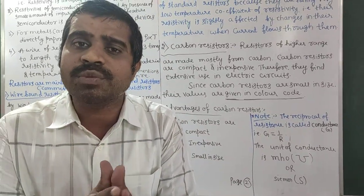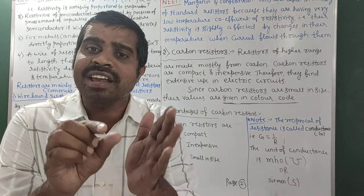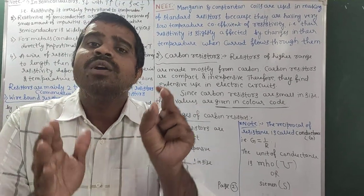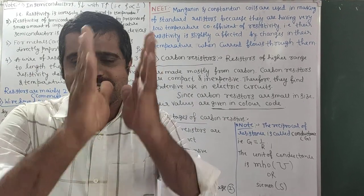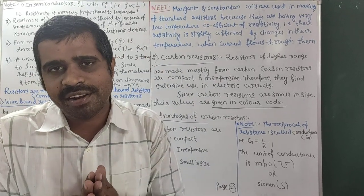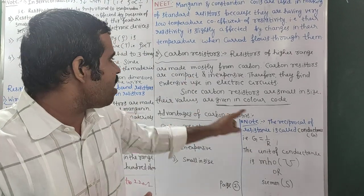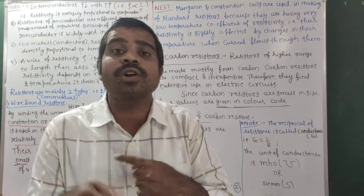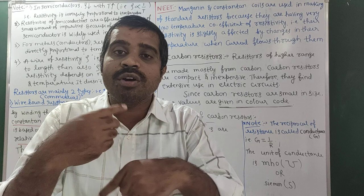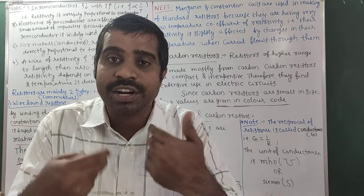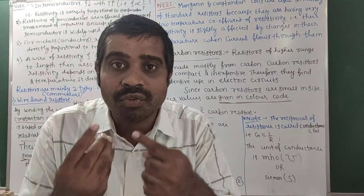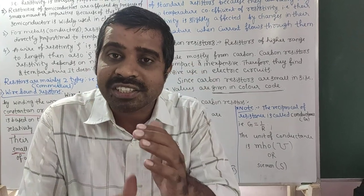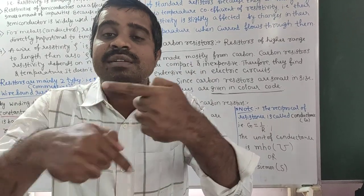Since carbon resistors are small in size, we cannot write the resistance value directly on them. Their values are given in color-coded rings. Color coding of resistors is an important discussion in our coming class.